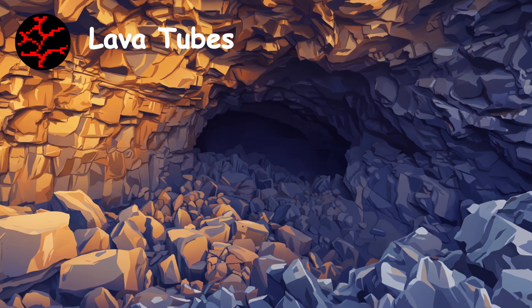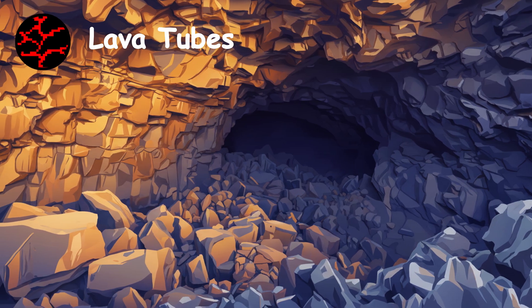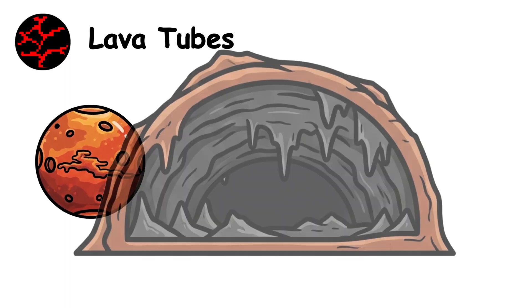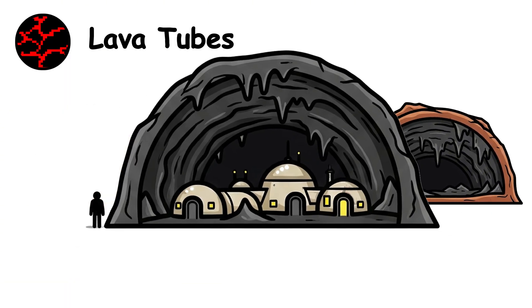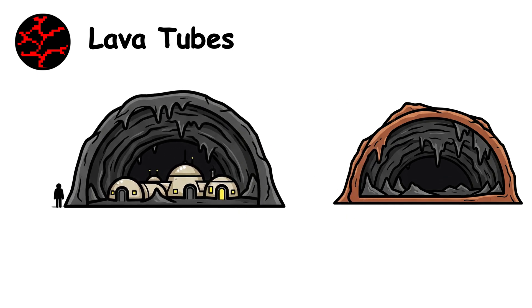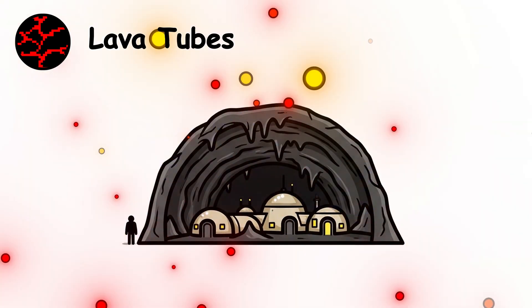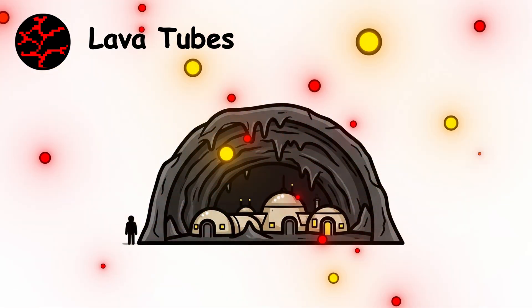Ceiling collapses create skylights that allow access. On Mars, astronomers have identified lava tubes potentially large enough to house entire human settlements, offering natural radiation shielding for future colonists.